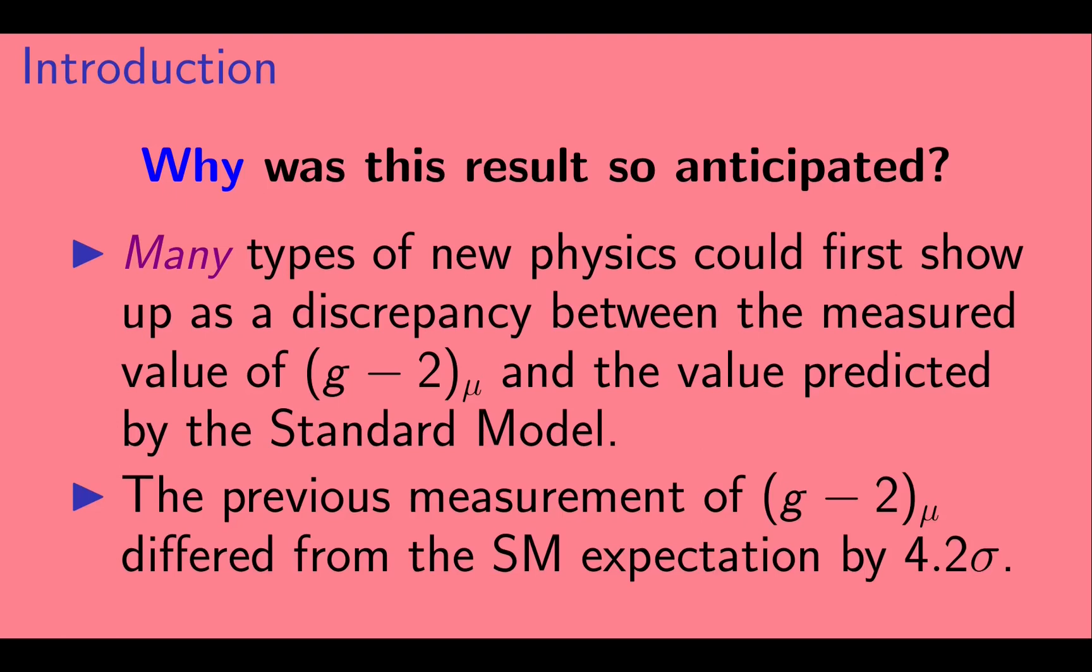And second, the previous measurement of muon g-2 differed from the standard model expectation by 4.2 sigma.